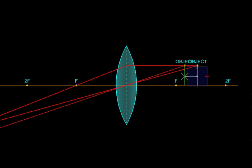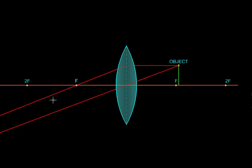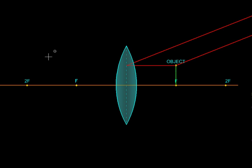In fact, when we reach f, it is at infinity, and then there is a sudden switchover from one side to the other. The image then comes on the same side as the object.